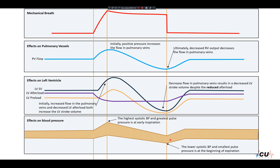With the start of expiration, blood pressure goes back up as a result of increased venous return from the right side. These changes do not necessarily occur at the end of inspiration — it depends on how fast blood moves from the right side to the left side; it may be earlier or later. In summary, the changes of positive pressure ventilation on the left side of the heart include increased venous return or increased preload, decreased afterload, and decreased left ventricular tension.